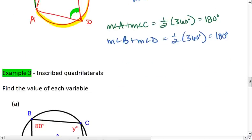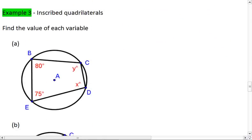Let's look at an example. For the quadrilaterals below, which are inscribed, I want you to find the values of each variable. Try this on your own first, and then resume the video when you're ready to check your solution.